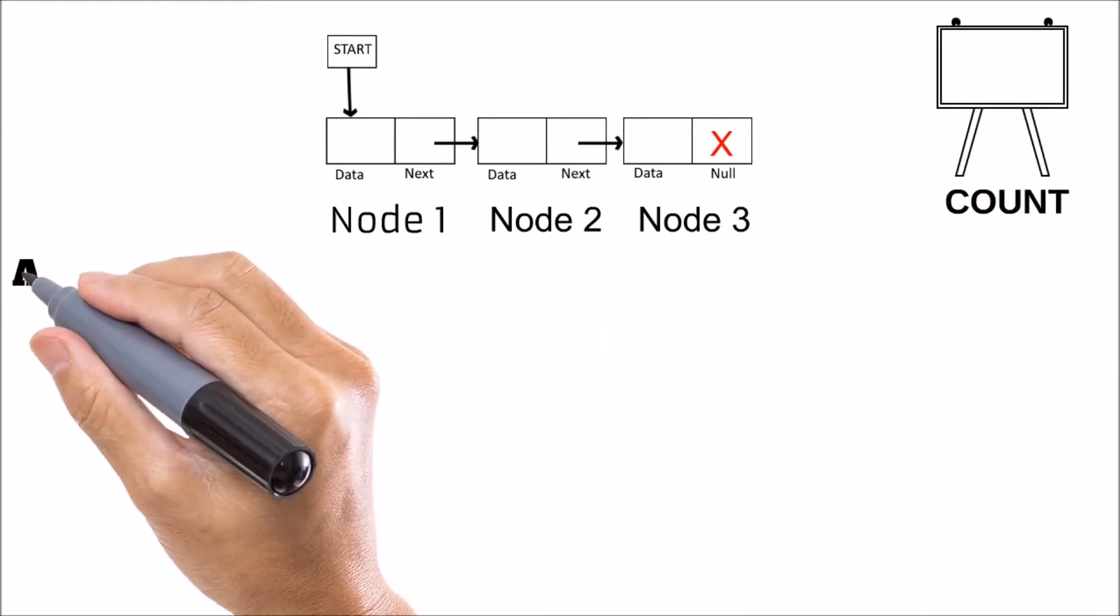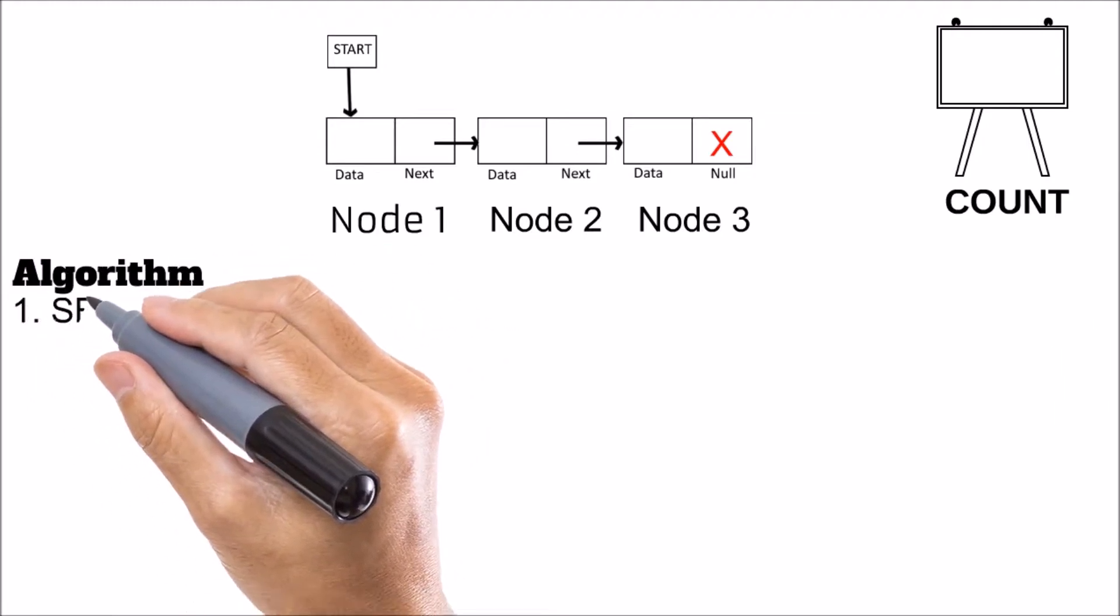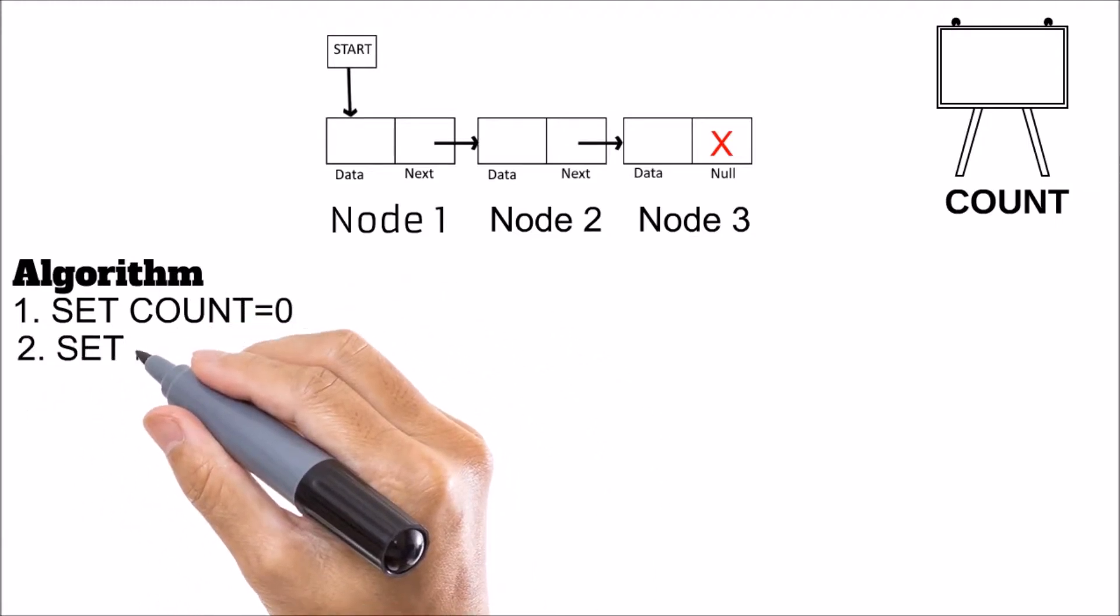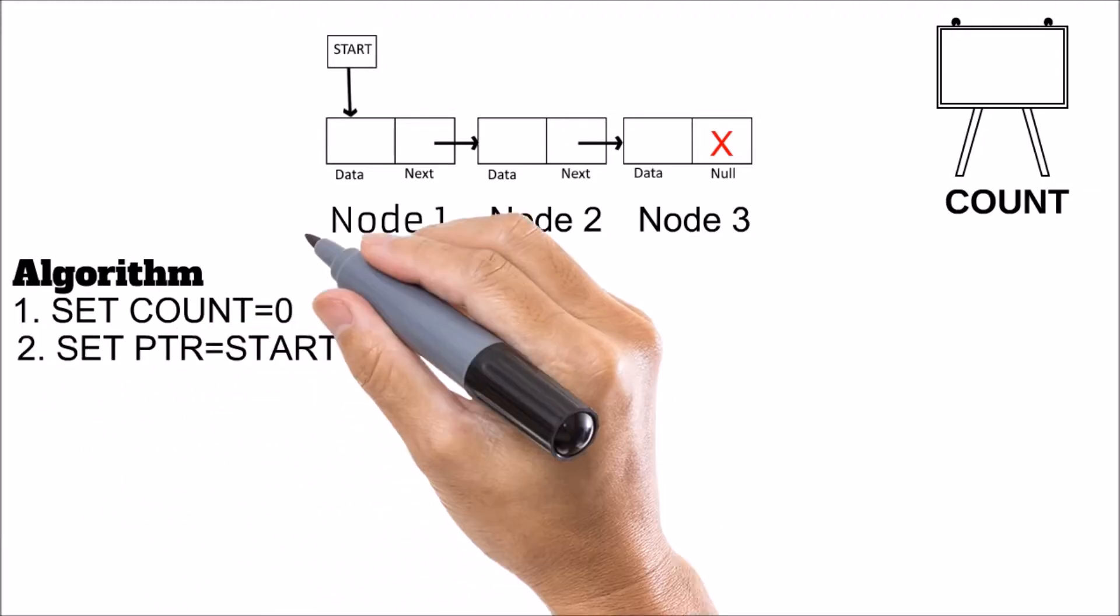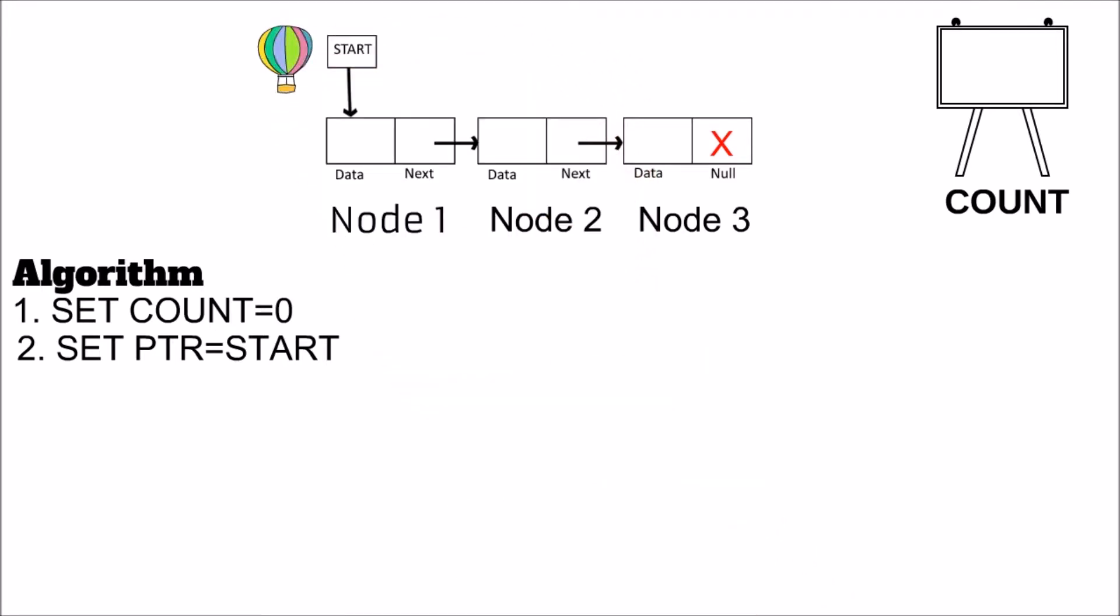So we initialize a display board which holds the counting of the nodes. We name it as count and initially set count equal to 0, and we set PTR equal to start.